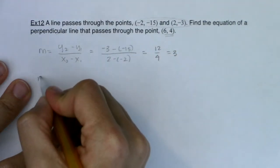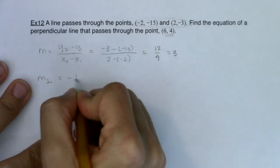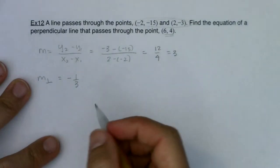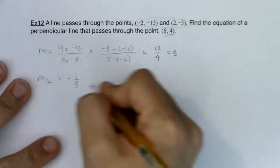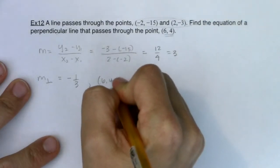Any line perpendicular to this line would have a negative reciprocal slope, right? Because the product of these two slopes would have to be -1. So the slope I'm working with for the perpendicular line is negative 1/3, and the point is (6, 4).